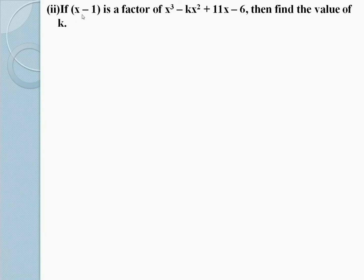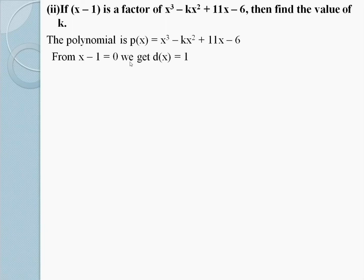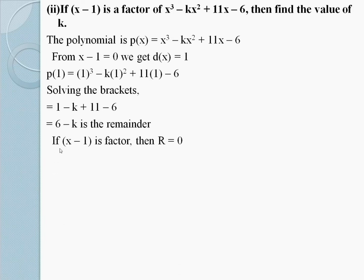Part 2: If x - 1 is a factor of x³ - kx² + 11x - 6, then find the value of k. The polynomial is P(x) = x³ - kx² + 11x - 6. From x - 1 = 0, we get x = 1. P(1) = 1³ - k(1)² + 11(1) - 6. Solving: 1 - k + 11 - 6 = 6 - k is the remainder. If x - 1 is a factor, then r = 0, so 6 - k = 0, giving k = 6 as the required answer.